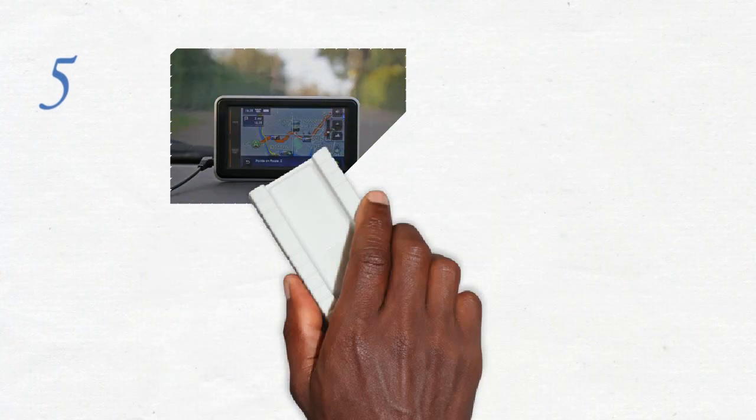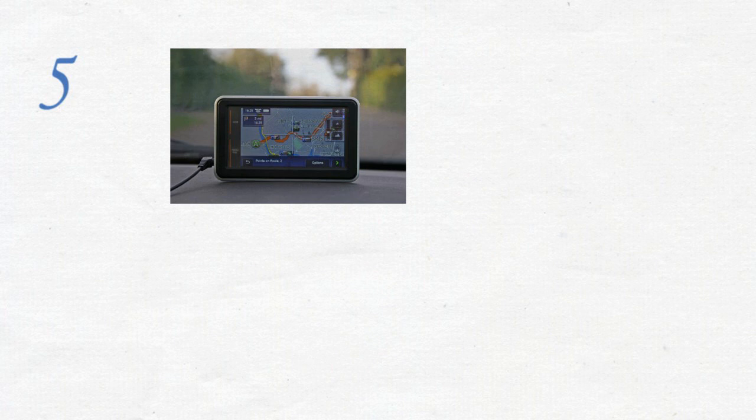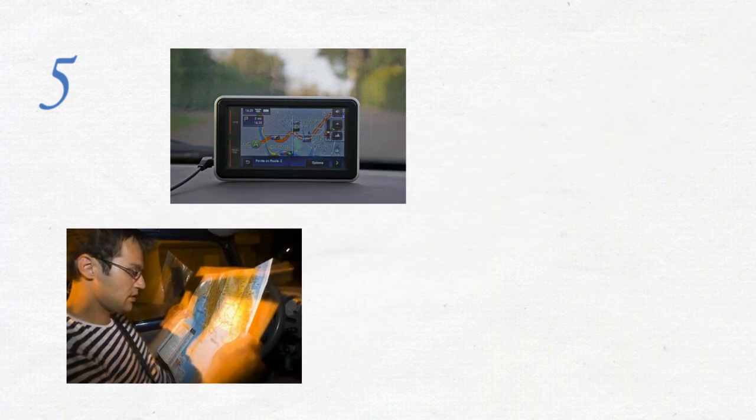5. Glancing at a map or directions. Looking at a navigation system. If you have to look at a map, program your phone to give you directions, or program a navigation system, pull over.